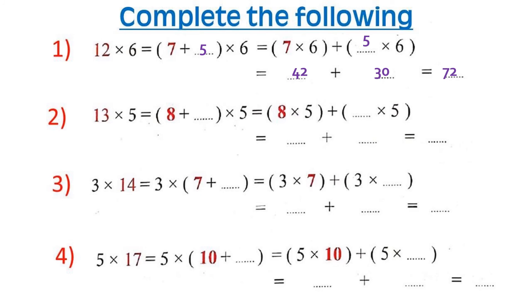Number 2: 13 times 5. We can break 13 into 8 plus 5. Then multiply: 8 by 5 equals 40 and 5 by 5 equals 25. Then add: 40 plus 25 equals 65.